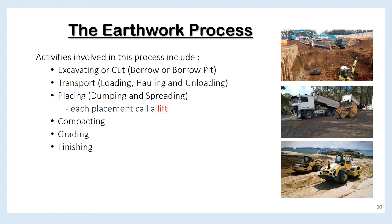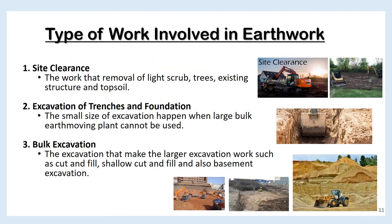The earthwork process generally follows a common set of steps. Earthwork involves excavating, transporting, and compacting the surface of the earth at another location. There are six main processes: excavating, transportation, placing, compacting, grading, and finishing. First, we cut or excavate the source material from the borrow pit. The material is then transported or hauled from the borrow pit. The soil must then be properly placed at the fill site — each placement is called a lift, and the material is no longer borrow but fill.